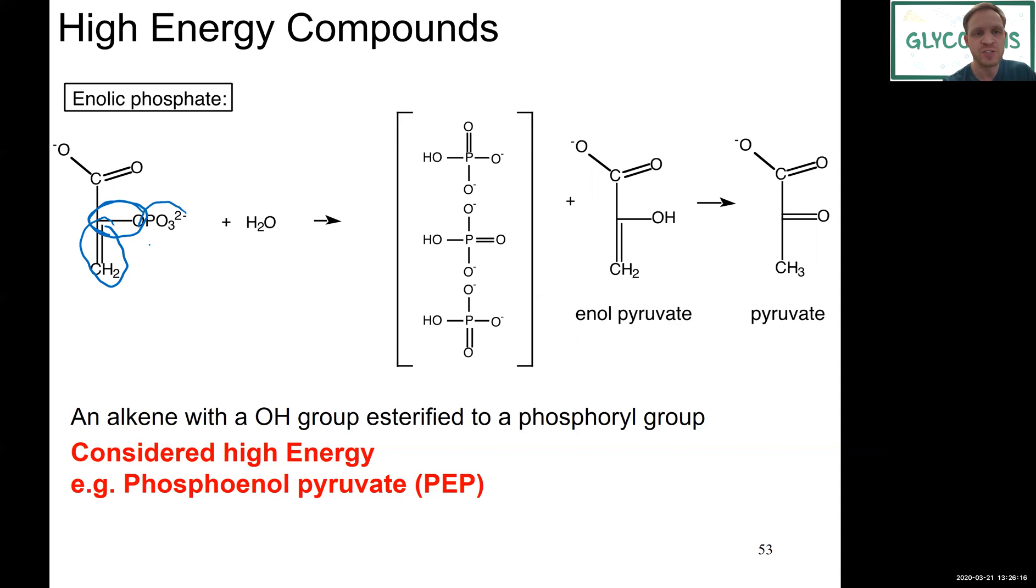You would have an OH group here and then you have it esterified to a phosphoryl group. So if it's only the alkene and the hydroxyl group it would be an enol; if it's esterified to a phosphoryl group you have an enolic phosphate. These are high energy compounds, and probably the prominent example we'll see this quarter is phosphoenolpyruvate, or PEP. That's one you want to remember.